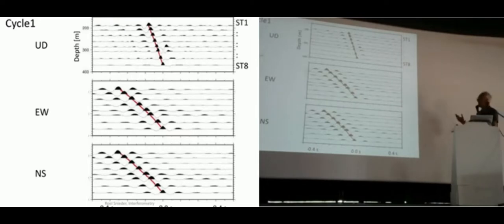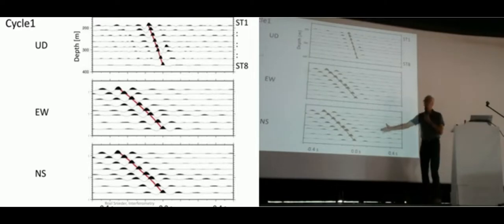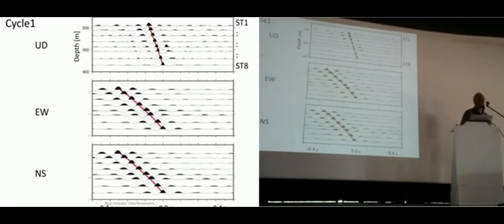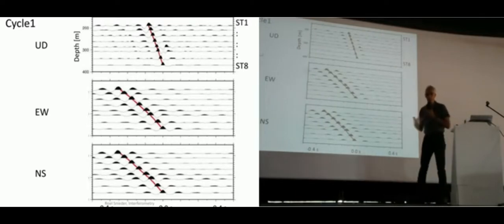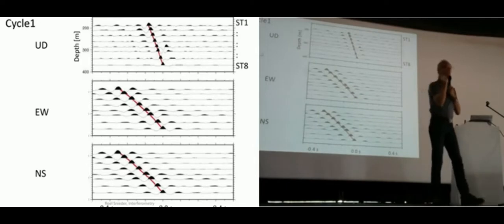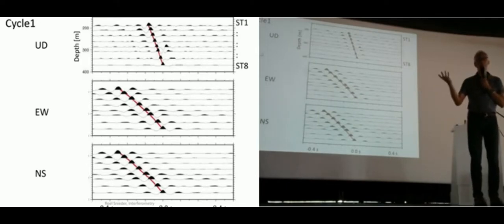You can do the same thing for the horizontal components — the east-west and north-south components, shown in the middle and lower panels. Again, you see a downward propagating wave, but it propagates with a slower velocity. Those are the shear waves. So this early study showed that by cross-correlating different components of the noise, you can get both the P-waves and the S-waves from noise cross-correlations.